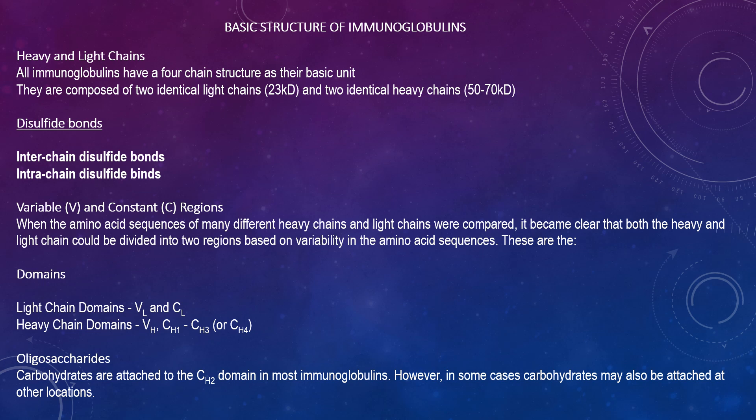Looking at the basic structure of immunoglobulins, these involve heavy and light chains. All immunoglobulins have a two-chain structure as a basic unit. They are composed of two identical light chains and two identical heavy chains, varying from 23 kD to 50 kD. They have disulfide bonds — inter-chain disulfide bonds and intra-chain disulfide bonds. The heavy and light chains, and the two heavy chains, are held together by inter-chain disulfide bonds and by non-covalent interactions. The number of inter-chain disulfide bonds varies among different immunoglobulin molecules.